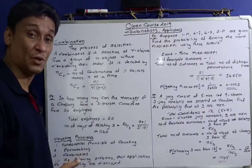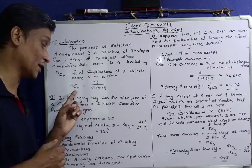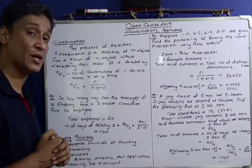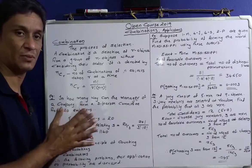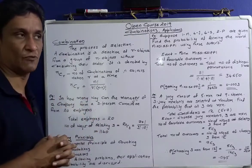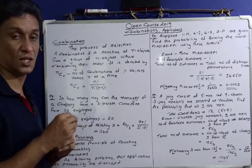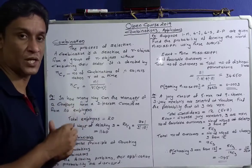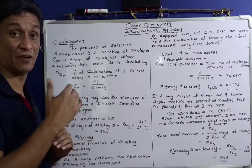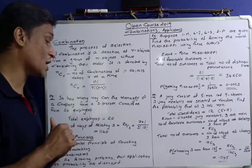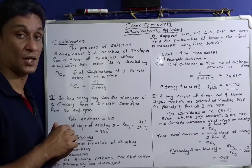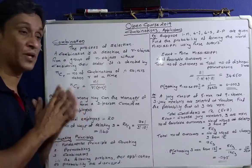nCr equals n factorial divided by r factorial into n minus r factorial. This factorial notation is mathematics at the plus 2 level, which you can study in the third video. nCr is the number of combinations of n objects taken r at a time, or the number of ways of selecting r objects from a collection of n without considering the order.